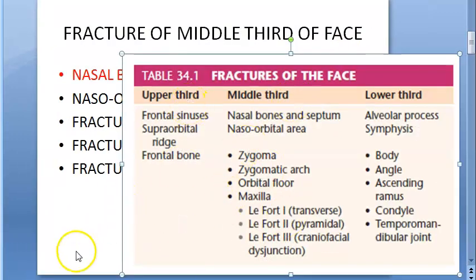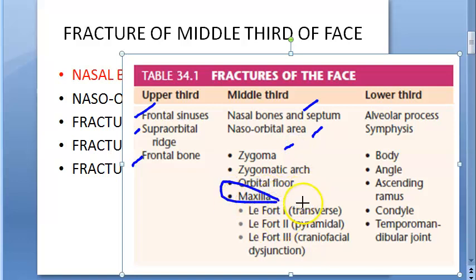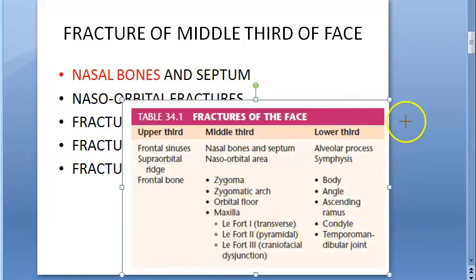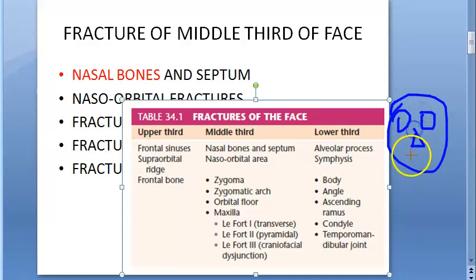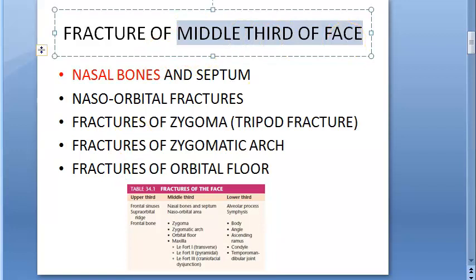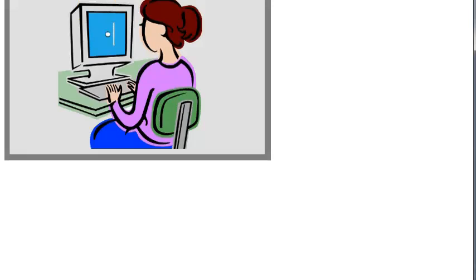Look at the face: the upper third contains the frontal bone and orbital supra-orbital ridge. The middle third includes the nasal bone, nasal septum, orbit, zygomatic arch, and maxilla — where LeFort fractures occur, covered in a separate video. The lower third contains the alveolar process and symphysis. Here we are concerned about the middle third of the face, specifically the nasal bone.